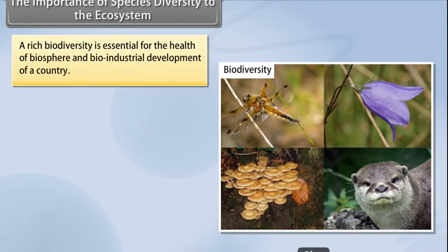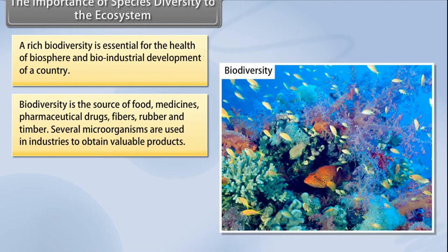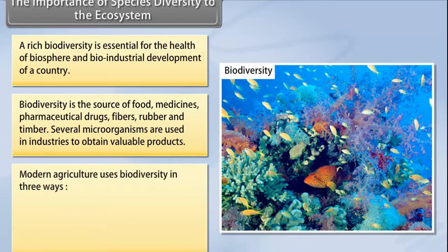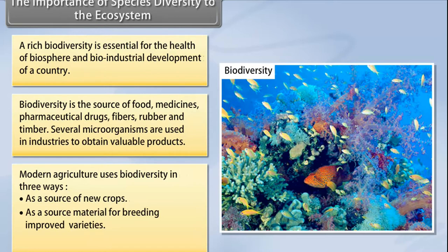The importance of species diversity to the ecosystem is essential for the health of the biosphere and the bio-industrial development of a country. Biodiversity is the source of food, medicines, pharmaceutical drugs, fibers, rubber, and timber. Several microorganisms are used in industries to obtain valuable products. Modern agriculture uses biodiversity as a source of new crops, as source material for breeding improved varieties, and as a source of new biodegradable pesticides.